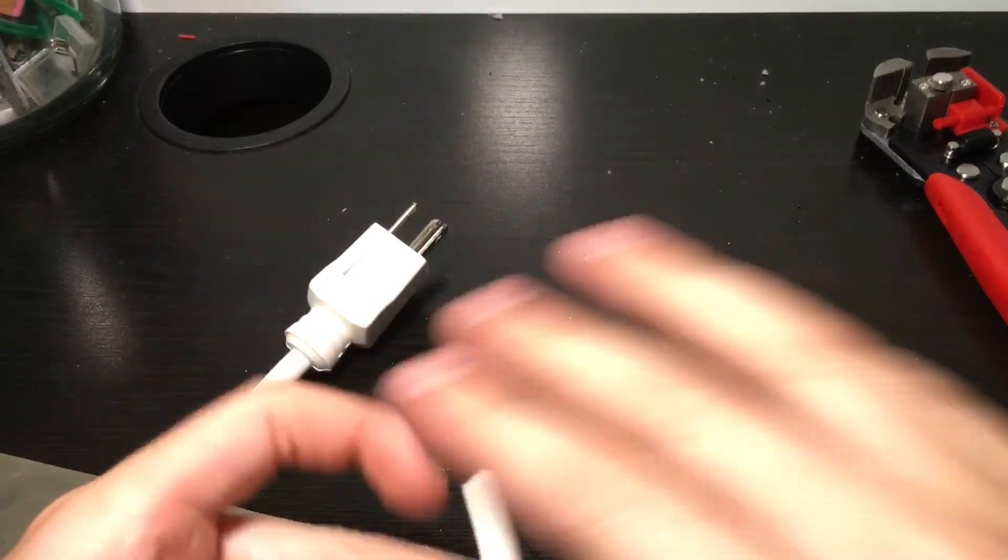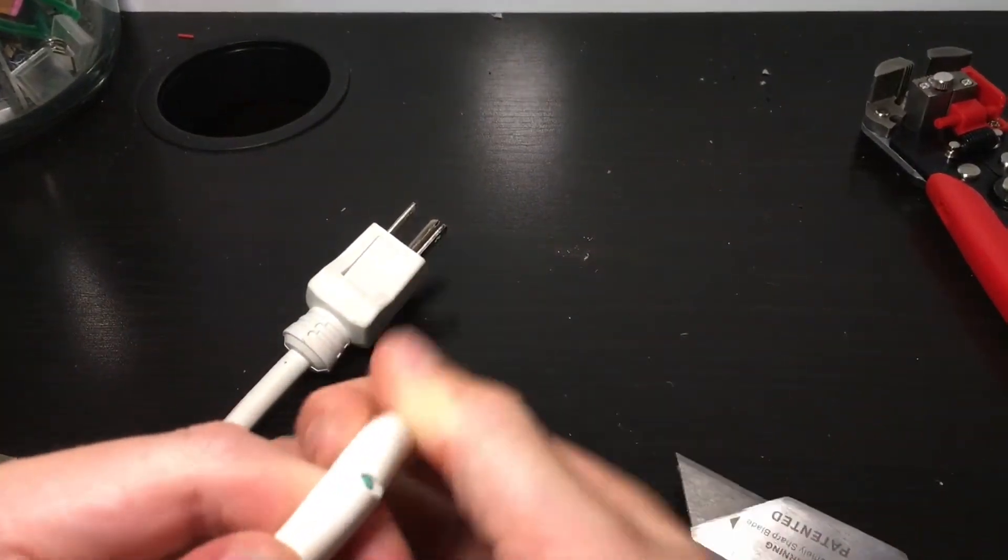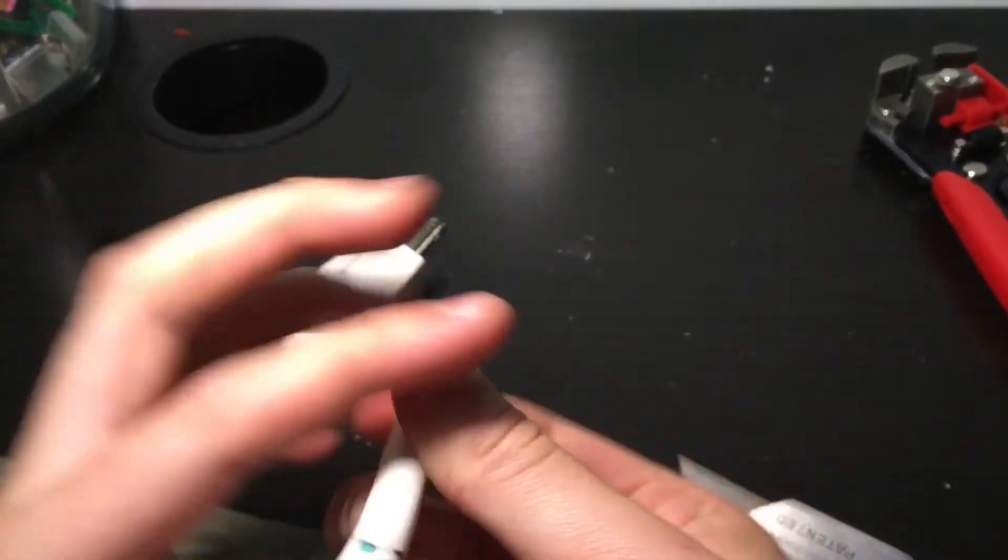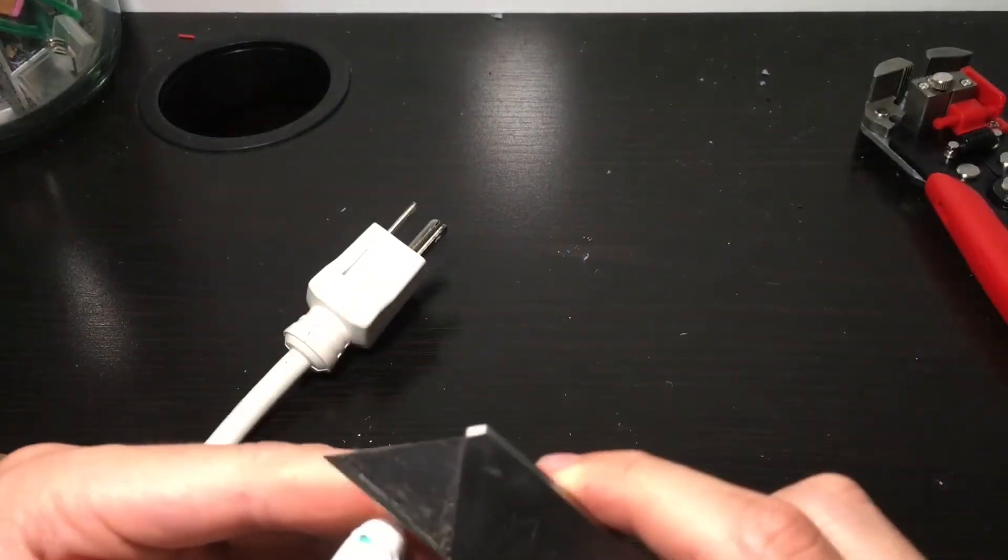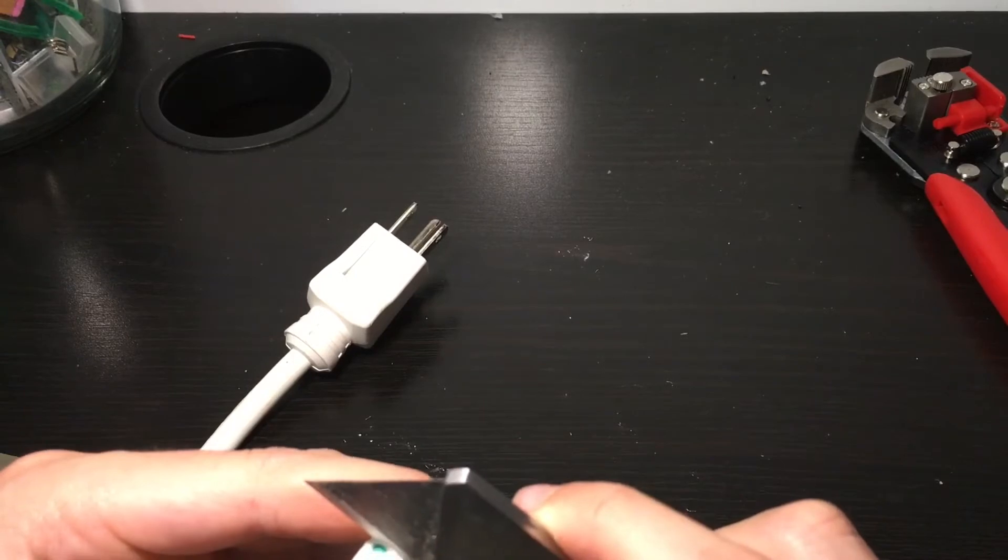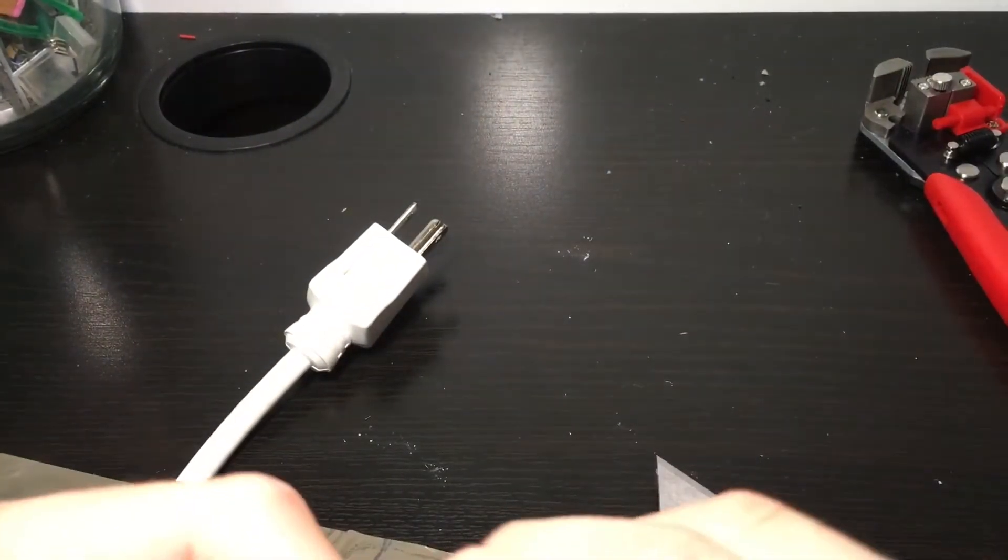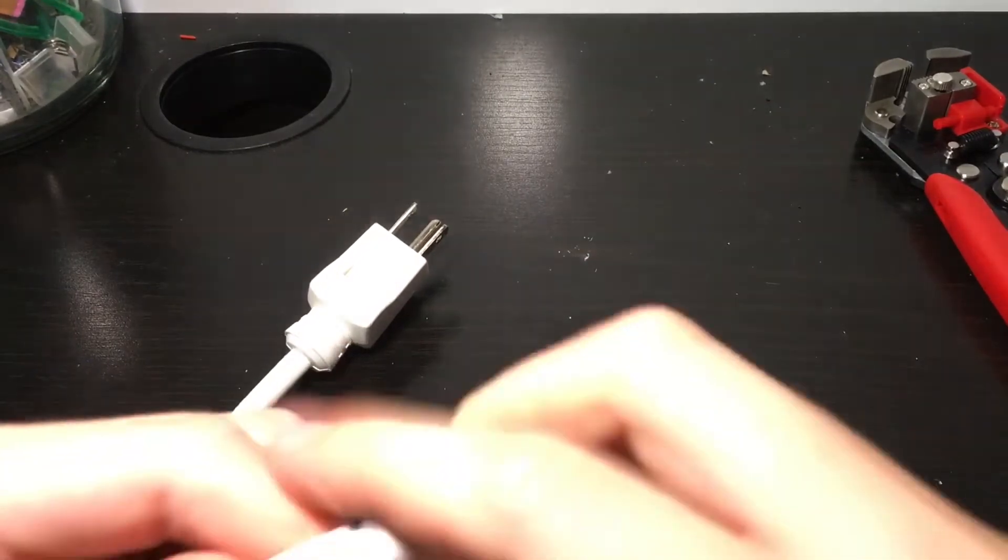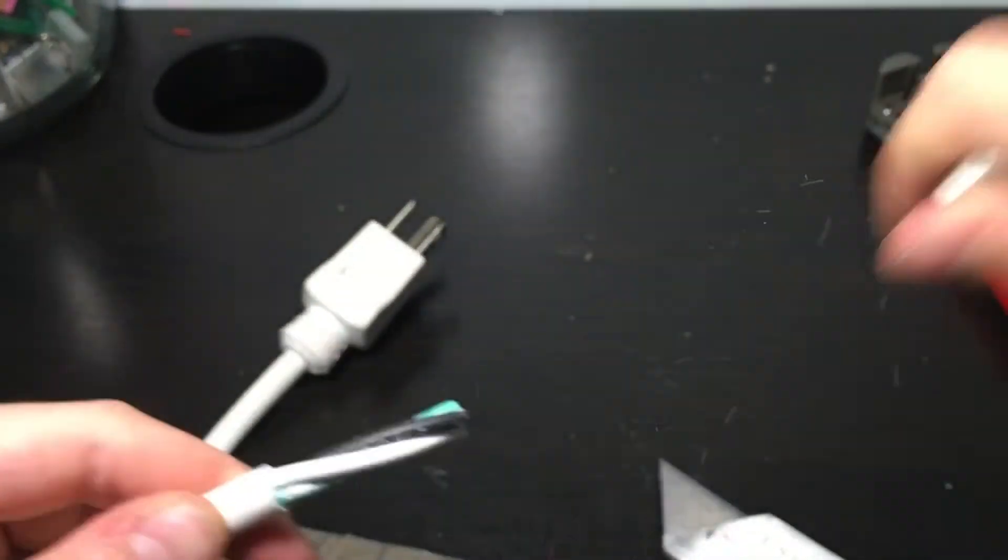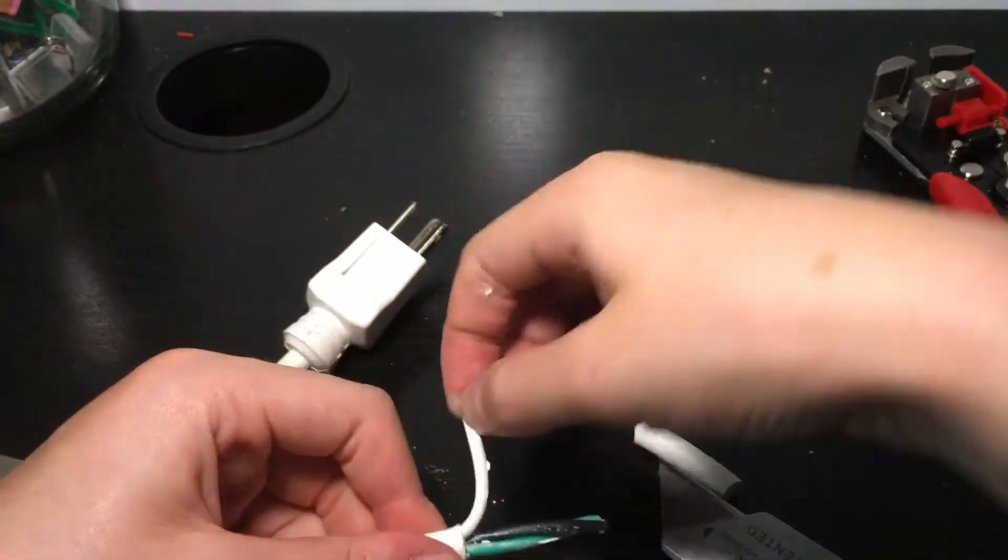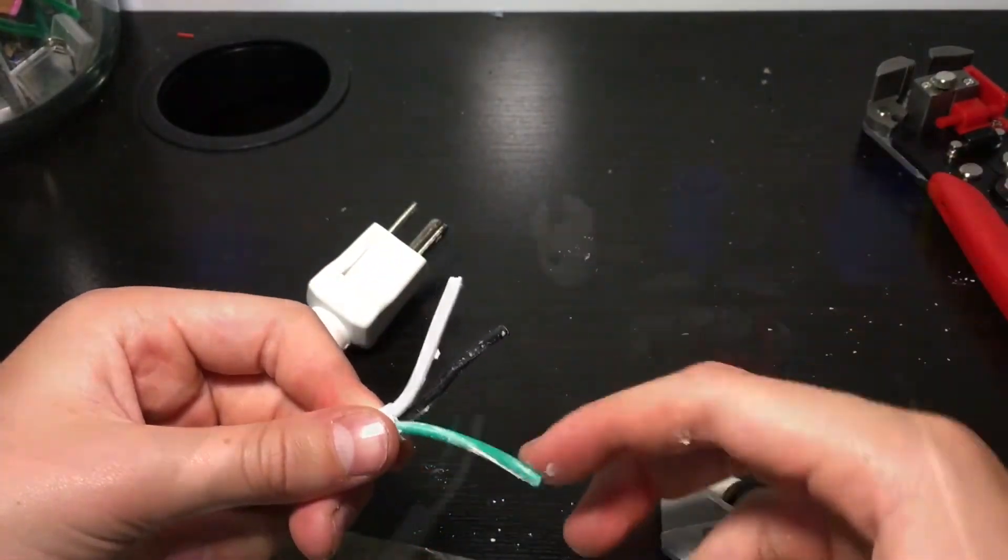For this step especially, I really like to use a razor blade because it's really sharp, and if you pull it tight enough, it's super easy and you don't need to dig into it at all. Once you've got all that, there might be a little white powder, and you need to pull apart all three wires.